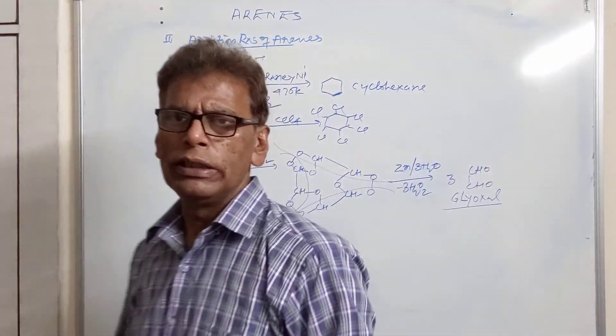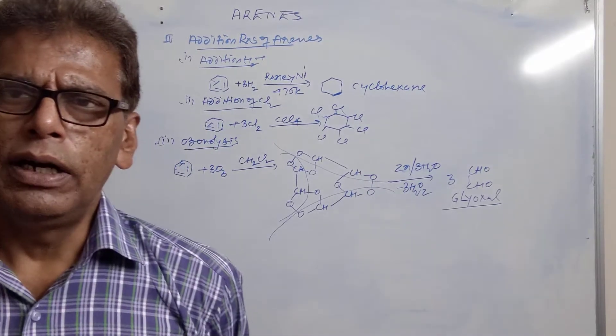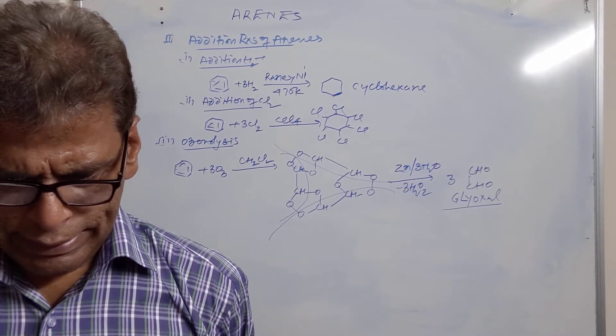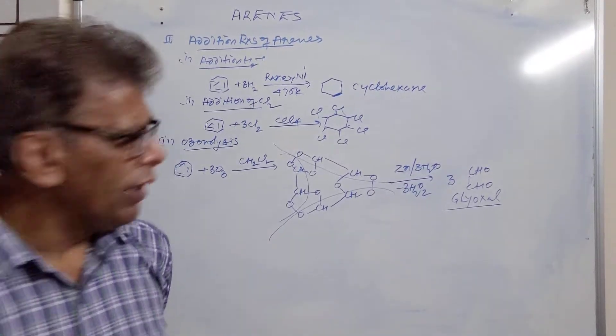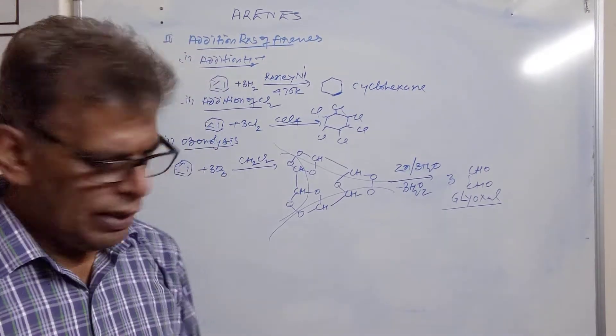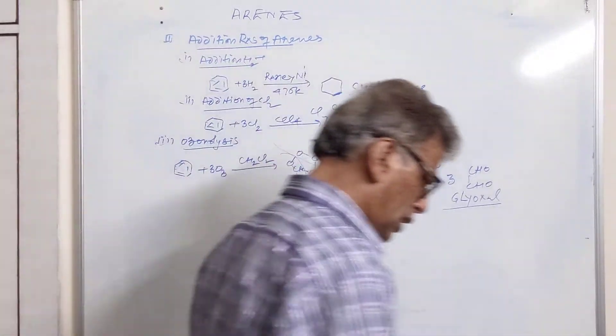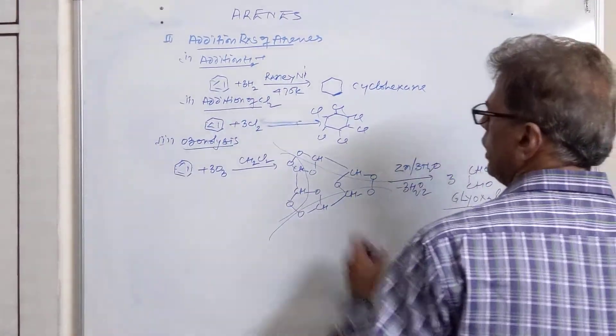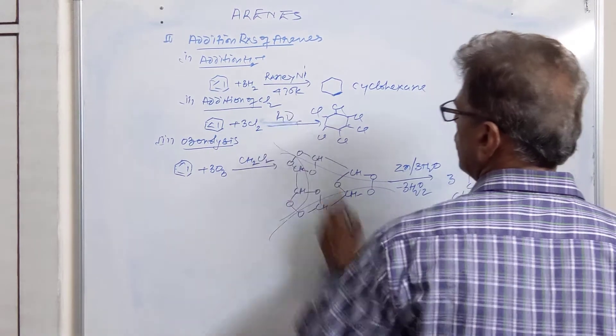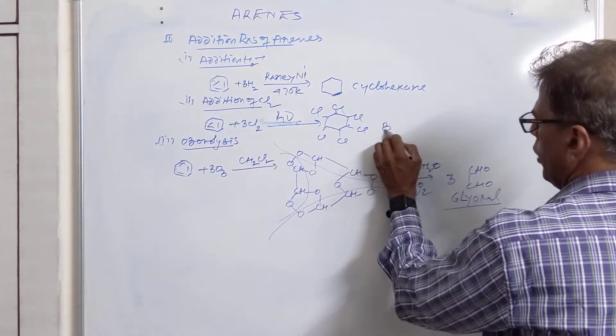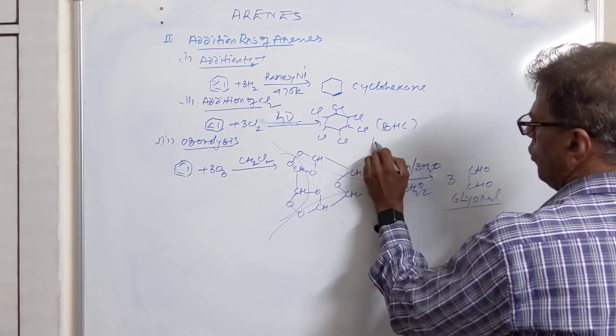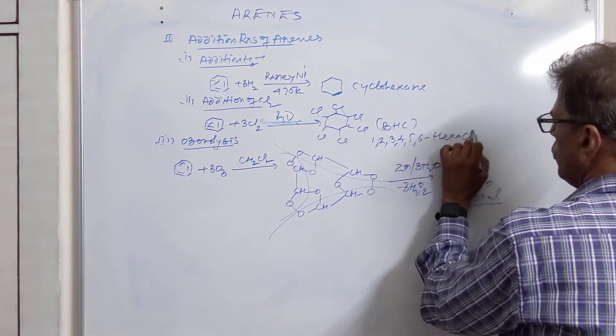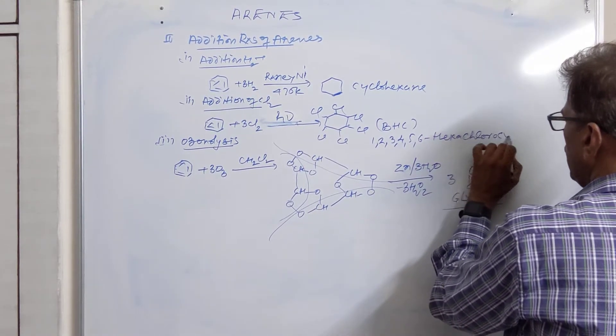So this is ozonolysis reaction. These are the three addition reactions of benzene where it has added three molecules of hydrogen, three molecules of chlorine. This reaction with CCl₄ will take place in the presence of sunlight. You can add here UV light. This is called benzene hexachloride BHC or 1,2,3,4,5,6-hexachlorocyclohexane.